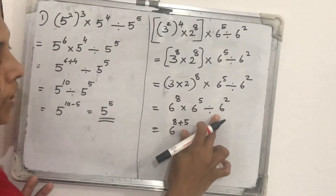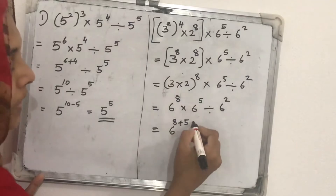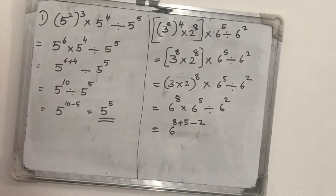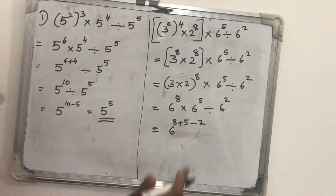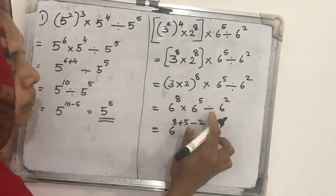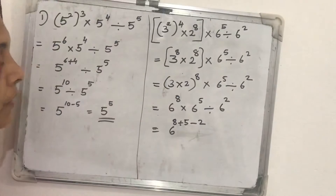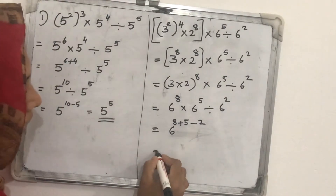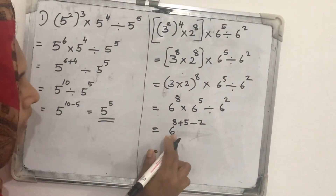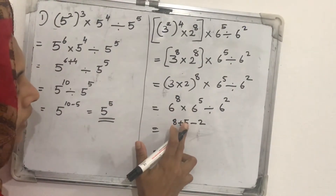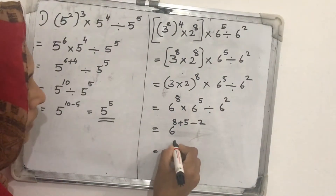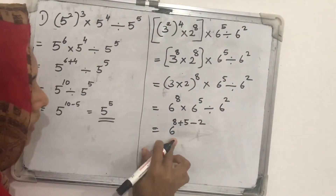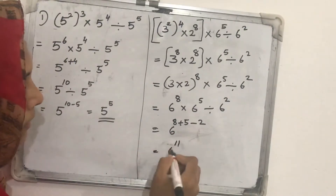Next is division, so the powers are subtracted. The law is x raised to a divided by x raised to b equals x raised to a minus b. Eight plus five is thirteen, and thirteen minus two is eleven. So the answer is six raised to eleven.